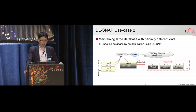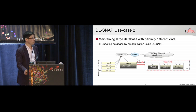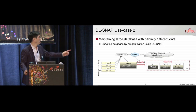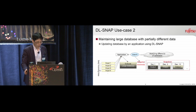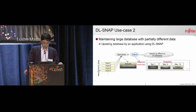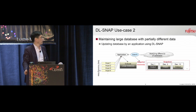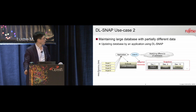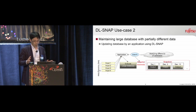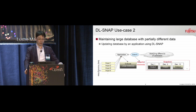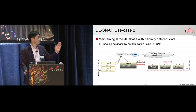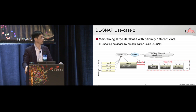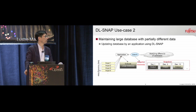The second use case is maintaining a large database with partially different data. In this case, some application gathers a lot of daily incoming data and makes some large database info out of it. A user can create a snapshot — for example, December 1st, December 3rd, and December 10th. In each case, there is partially different data. So the user can use the large database but with different data, and take some analysis for the difference. This is our use case.